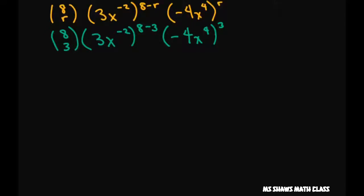Alright. Now using your calculator or you can do the long way. 8 choose 3 is 56. Then we have, this is just to the fifth power. So let's just write that. 3 to the fifth power is 243. Then you multiply these two exponents and that's x to the negative 10.